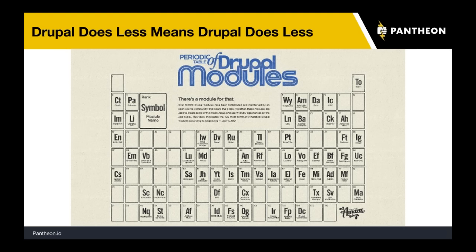Drupal does all these wonderful things for us, and there are hundreds of modules in use by hundreds of thousands of sites. A lot of Drupal modules have to do with how stuff is displayed to the user. Once you're no longer using Drupal to display stuff to the user, most of these modules — or a lot of them anyway — come off the table as things you can utilize. Anything they were doing for you, you're now doing some other way, and that probably involves building it yourself.